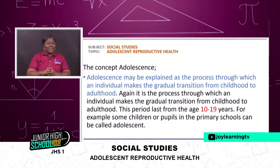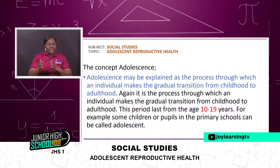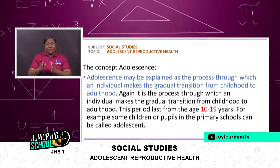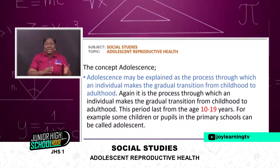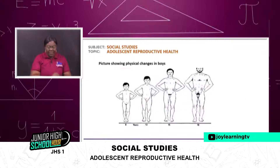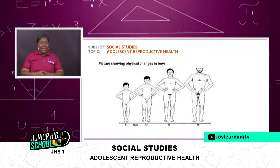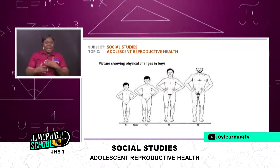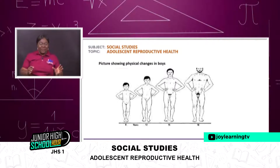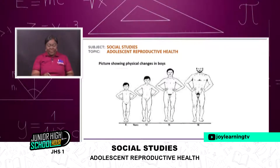I know you have a little brother or sister who is in primary school within this age bracket. When the person is between the ages of 10 to 19, then the person is in that transition. There is a picture on the screen — I hope you can all look at it very well — and this depicts the transition.